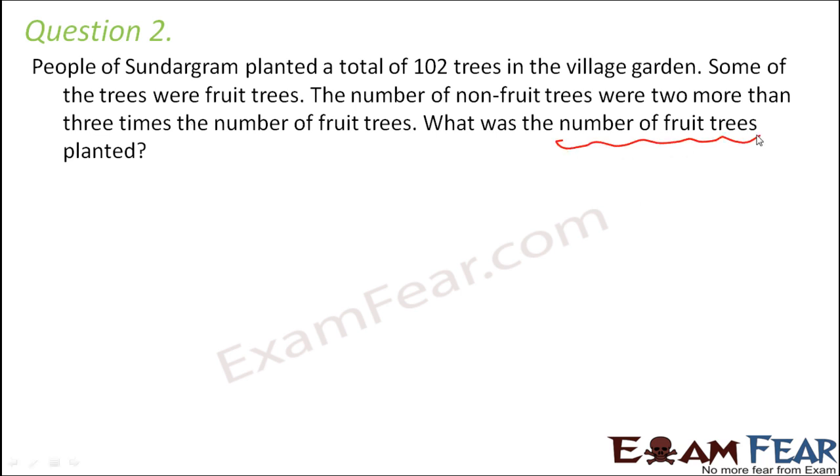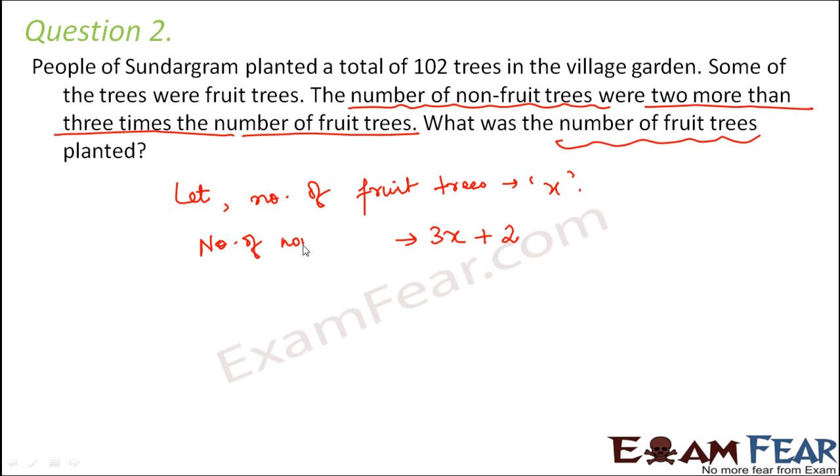Now we need to find the number of fruit trees. So let us assume that the number of fruit trees is X. That is anyways our first step is to assume something that we do not know as X. Now let's make use of the condition that is given. The condition is number of non-fruit trees is 2 more than 3 times the number of fruit trees. So 3 times the number of fruit trees plus 2 more. That is 3X plus 2. This is going to be the number of non-fruit trees.